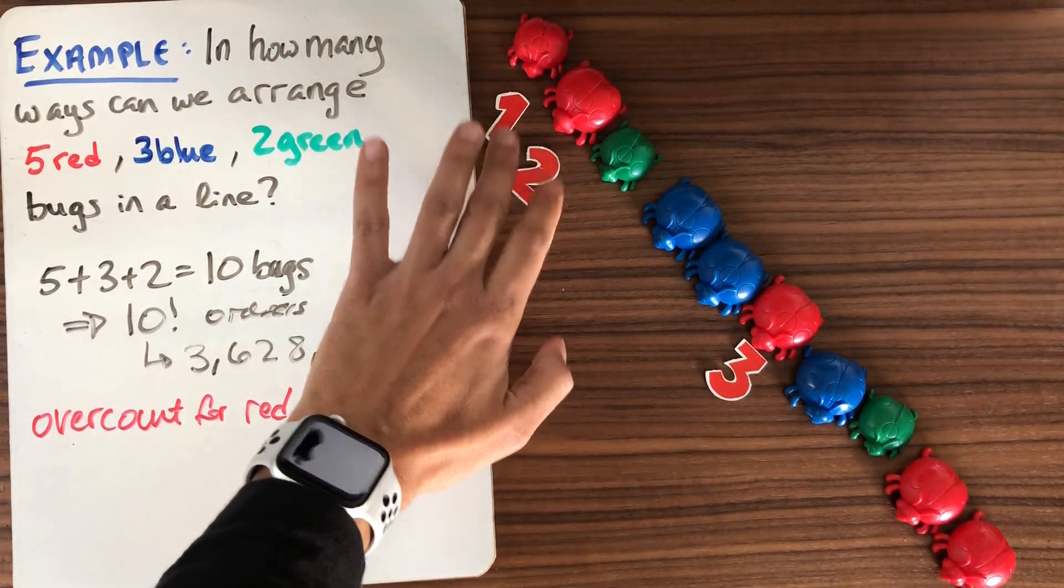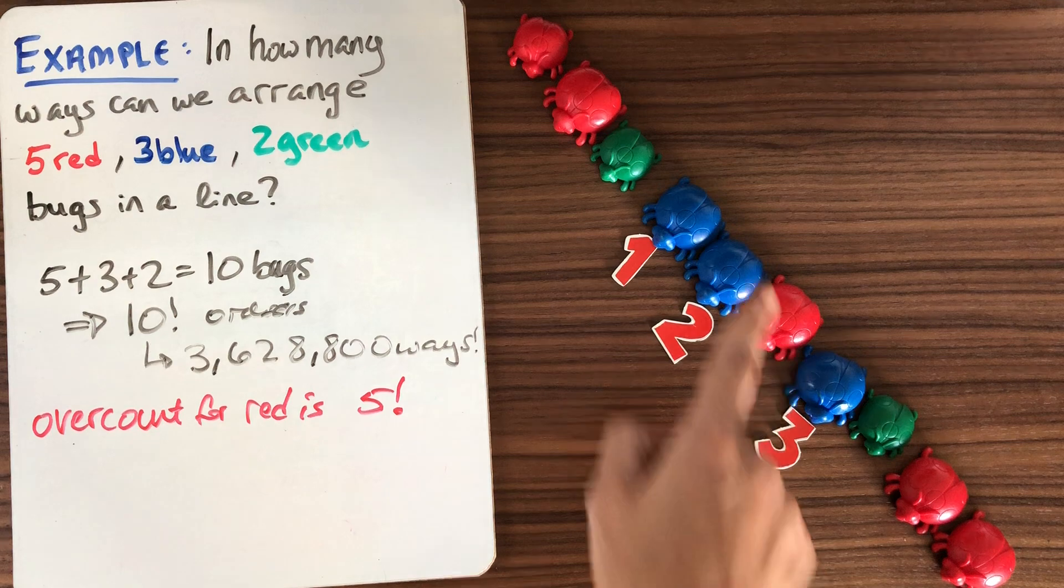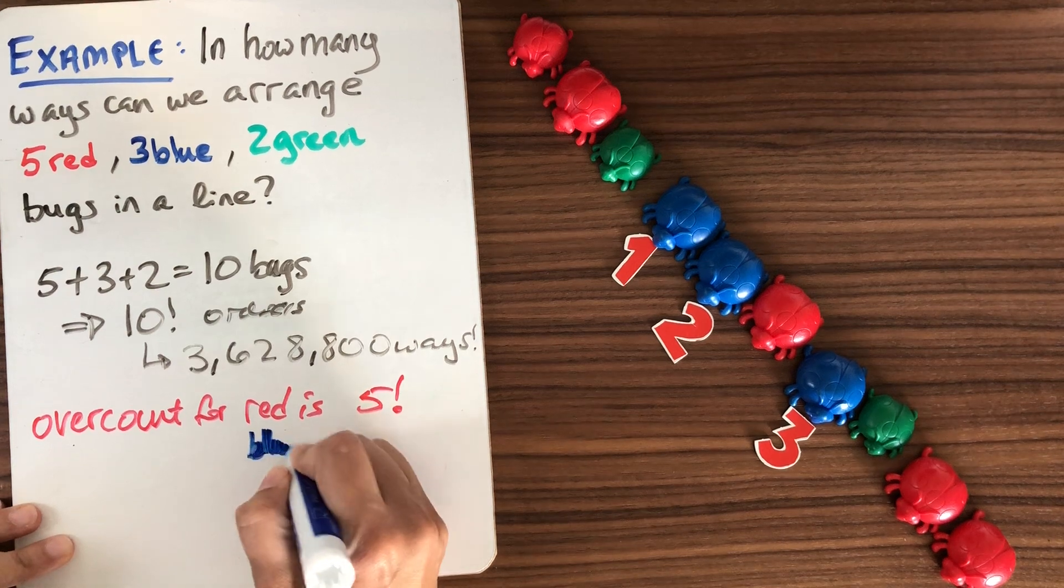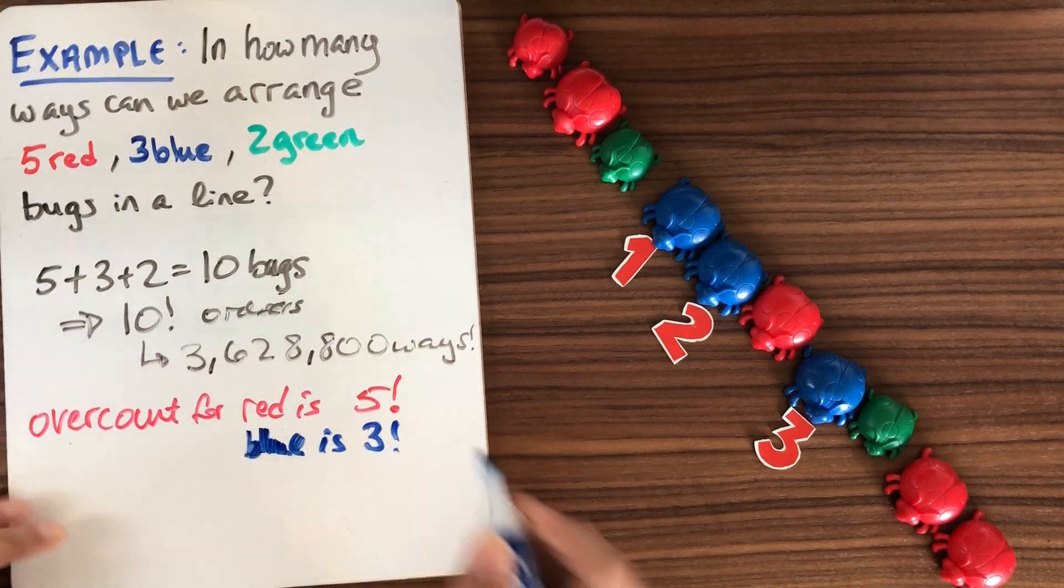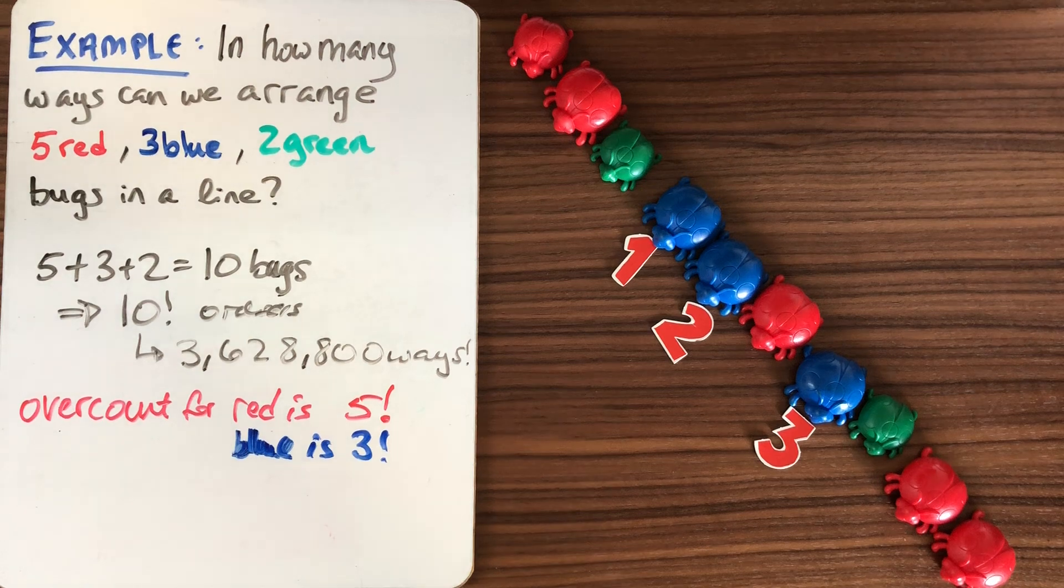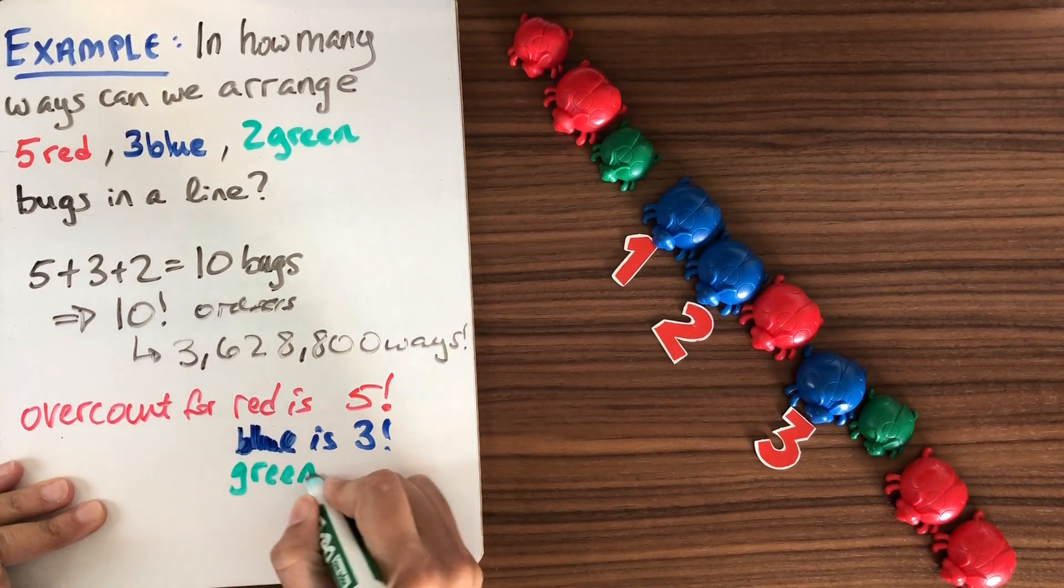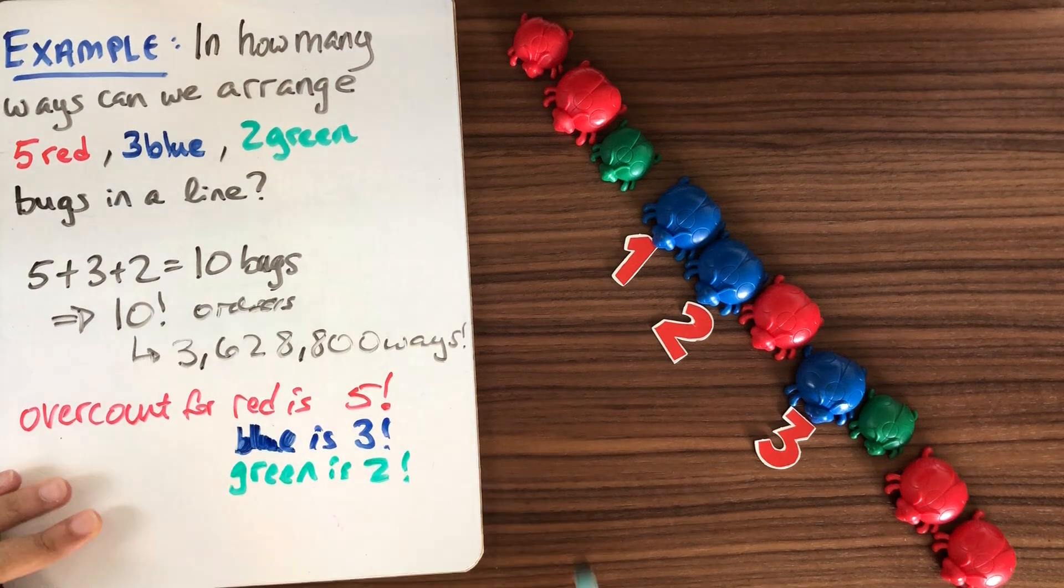And similarly, I could take the blue bugs and I can do any rearrangement of these three positions. So I've overcounted for blue is 3 factorial. And for green, I've overcounted by 2 factorial.